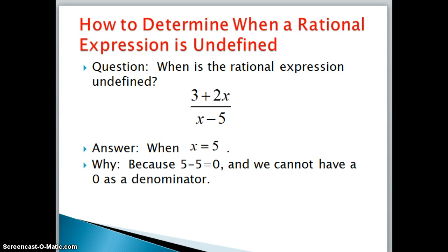Now the reason for that is if you can imagine plugging in 5 for x into the denominator, we see that we get 5 - 5, which is equal to zero. And we know we cannot have zero as a denominator, because we cannot divide by zero. So for this expression, it would be undefined for x equals 5, and it would be defined for all other values of x.